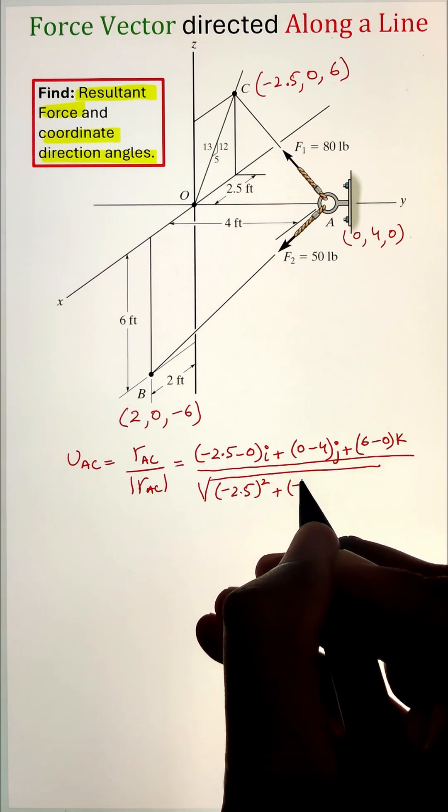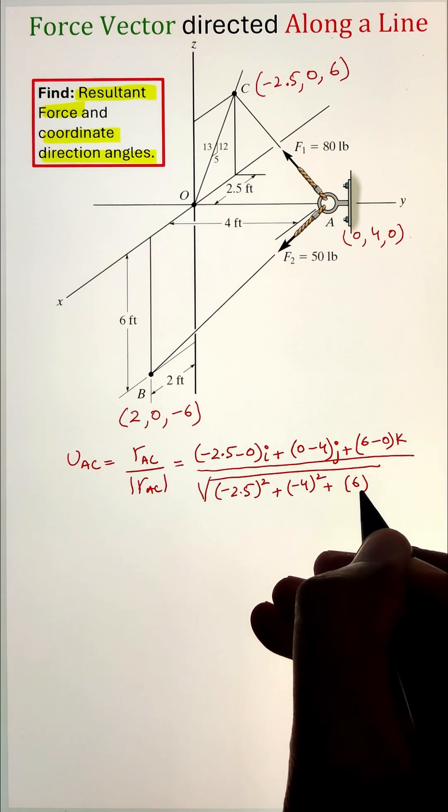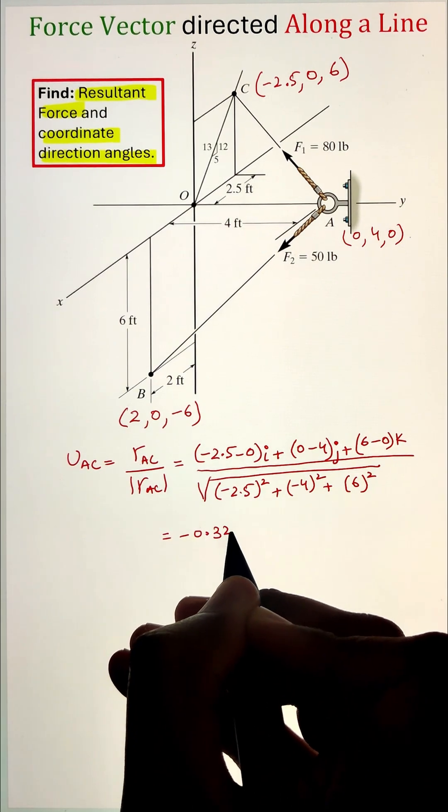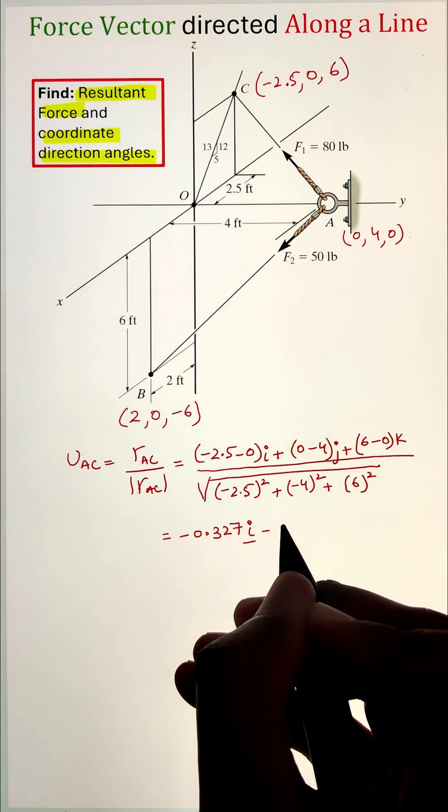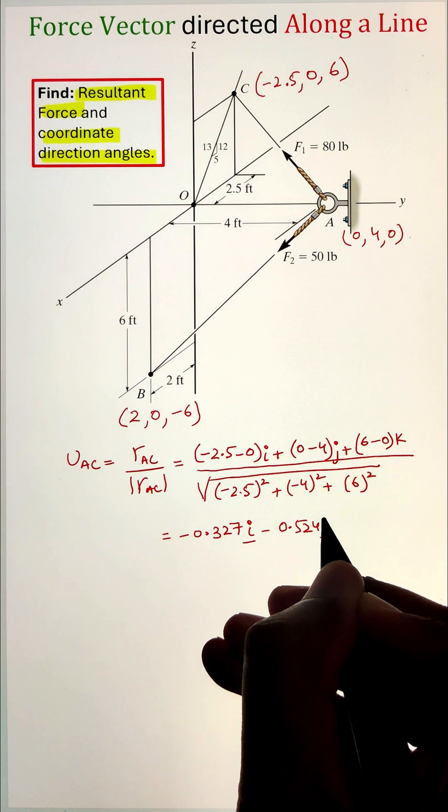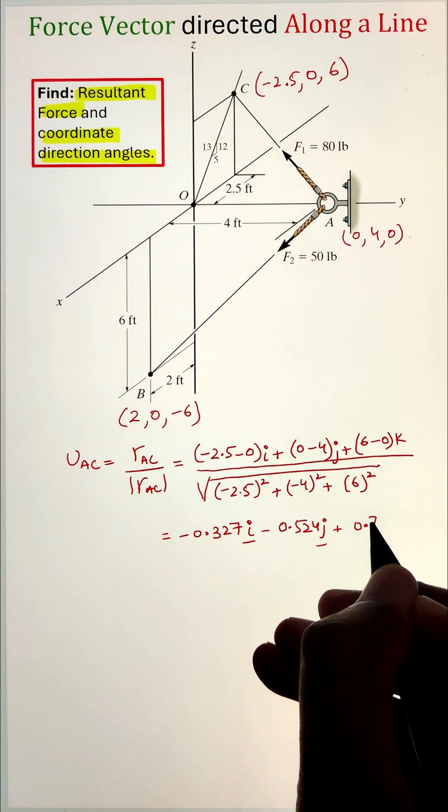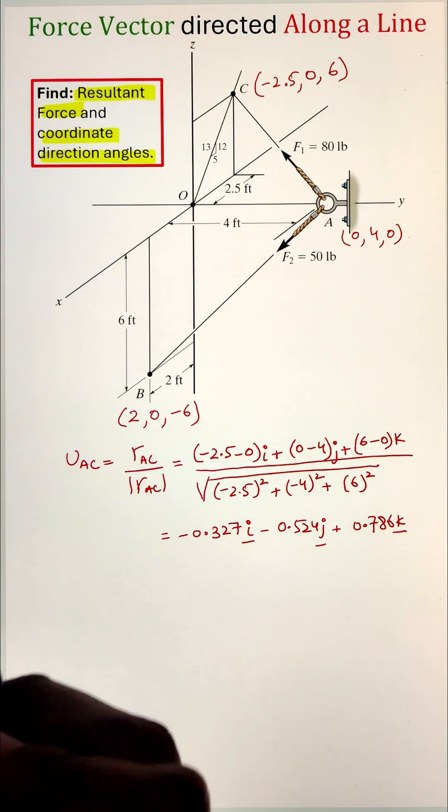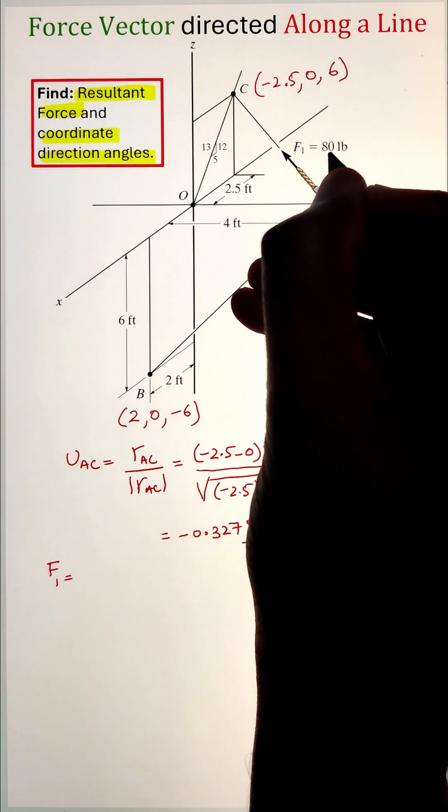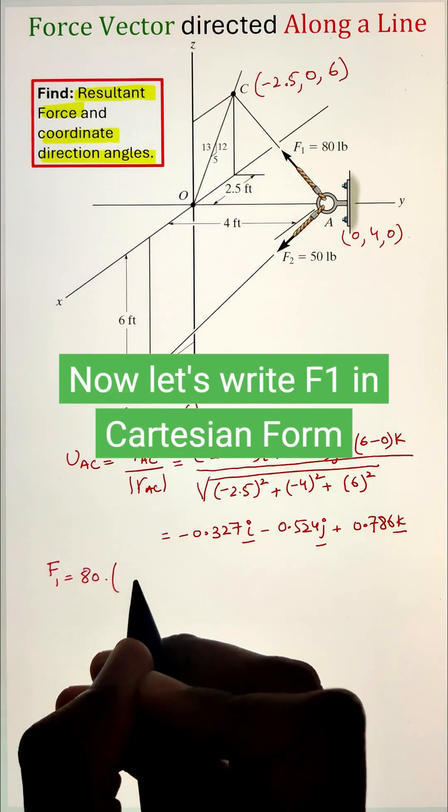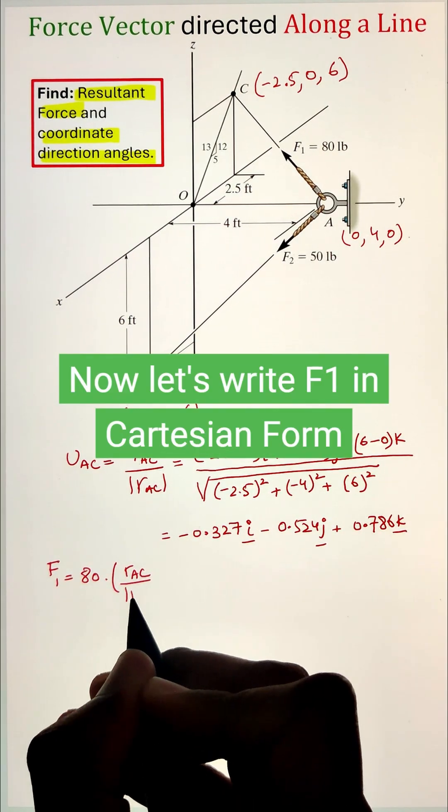Next, we can go ahead and calculate the unit vector UAC that is equal to the position vector divided by the magnitude of the position vector. The position vector is calculated by doing the head minus tail. So we subtract the point coordinates of C with the point coordinates of A and divide it with the magnitude of that position vector.